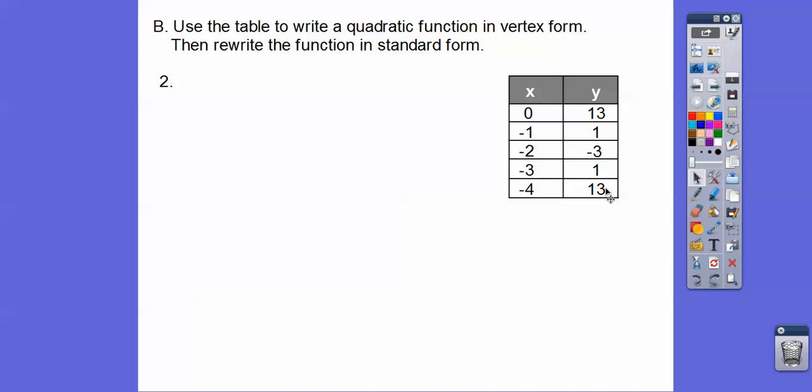So 13 here, 13 here, and then 1 and 1, so this is the vertex right here, negative 2 comma negative 3. That is hk, so there we go. All right, so I'm going to go ahead and x minus a minus 2 is going to be x plus 2. Now we got to substitute in any one of these points. I'm going to pick this one right here because I like the zeros right there. Remember, this is y and this is x.